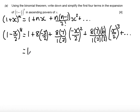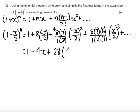Now I simplify. The first term is 1. For the second term, 8 times (-x/2) gives me -4x. For the next term I simplify the coefficient fraction first: cancelling the 2 with the numerator and denominator gives 4 times 7 which is 28, and (-x/2) squared is x squared over 4.